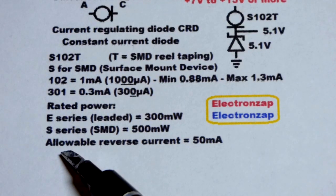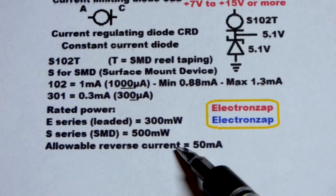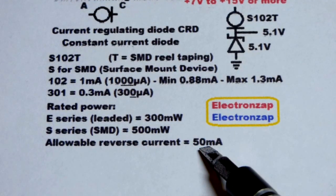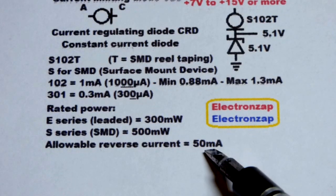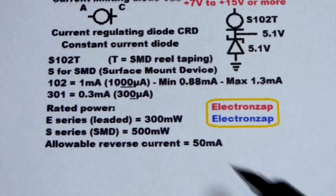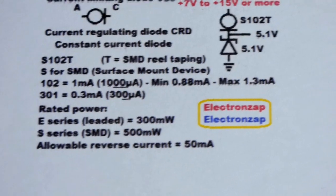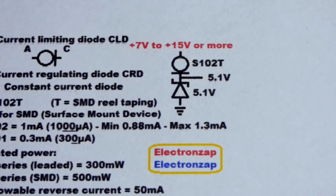If you put it in backwards, and I tested this out, it looks like it passes whatever current you apply to it with the other components and stuff. So I had current limited well below 50 milliamps, but it looks like 50 milliamps is the maximum allowable reversible current. So the circuit we looked at with the zener diode, we had a really steady voltage.